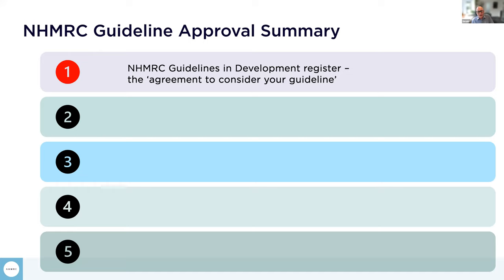Once a request has been registered, we have an initial meeting with the guideline development team to go through a basic outline of what's involved. We particularly want people to understand the importance of having a methodological basis, understanding GRADE, and having the correct staffing. Once that step has been completed, we write to our CEO asking for formal agreement to take this guideline onto our program. It's important to point out that NHMRC approval does incur a cost in terms of contractors and staff time, so resources must be used carefully.